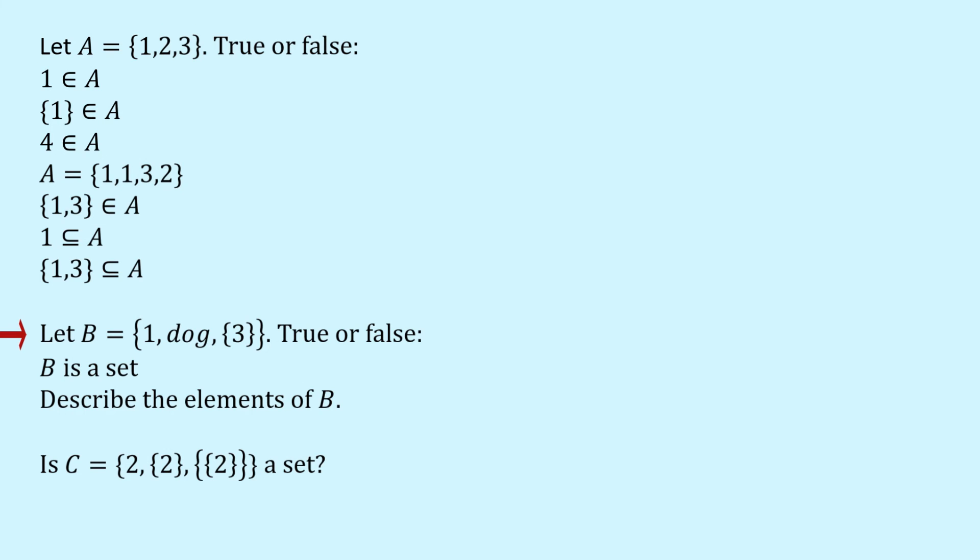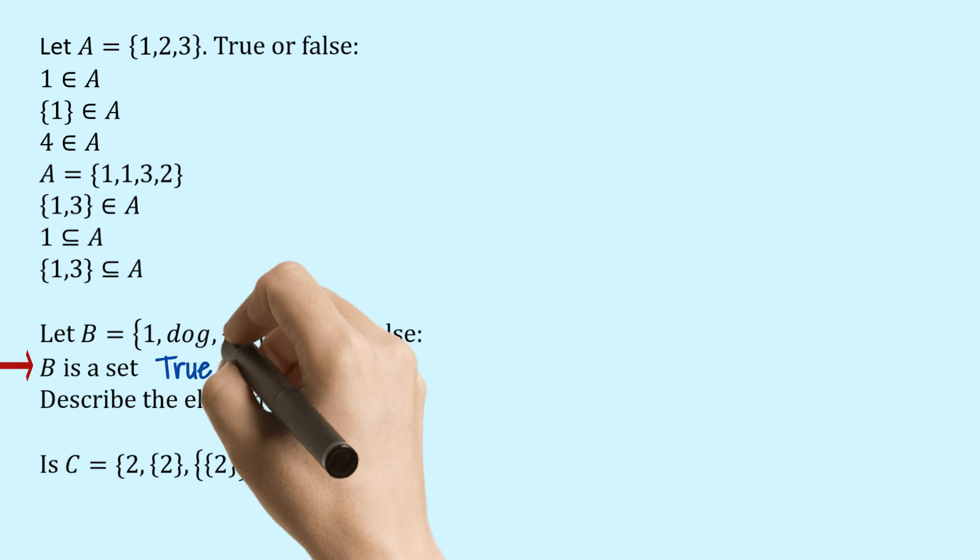Let's now go back to our problems and we'll go to B. So we're given this expression for B. Is it a set? True or false? Well, there's nothing that I said that says that sets can only contain numbers. They can contain other things. So in this case B has got three elements. It's got the number 1, the word dog and the set containing the number 3. So this is a perfectly valid set.